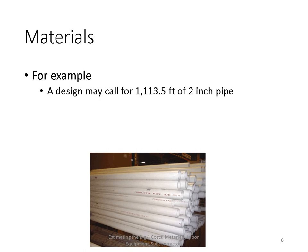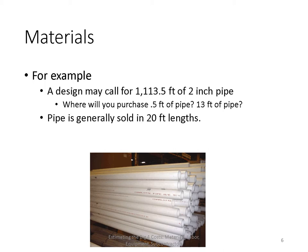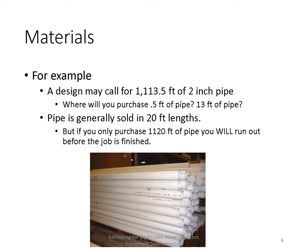For example, a design may call for 113.5 feet of two-inch pipe. Where will you purchase half a foot of pipe, or 13 feet for that matter? Pipe is generally sold in 20-foot lengths. If you only purchase 1,120 feet — rounding up to the nearest 20 — you will run out before the job is finished, because you need to make several cuts and welds between different joints. You need to think about how many feet to purchase in 20-foot increments.